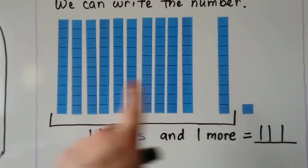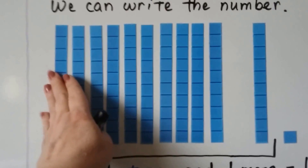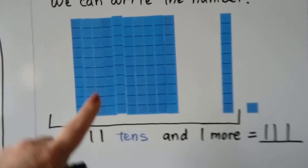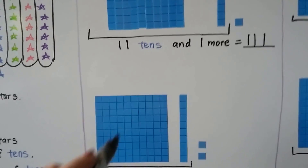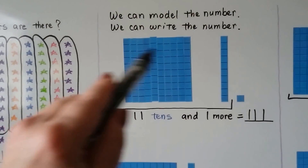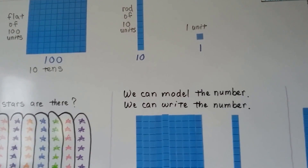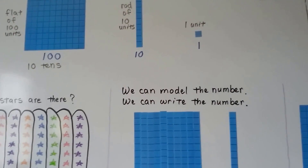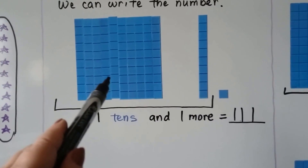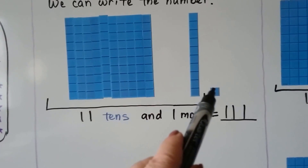And we know that we can squeeze these tens together — these 10 tens — to make a flat of 100. Because 10 tens are equal to 100, and that'll make a flat of 100 little units. So here we have 100 and 10 more. That's 110, 111.